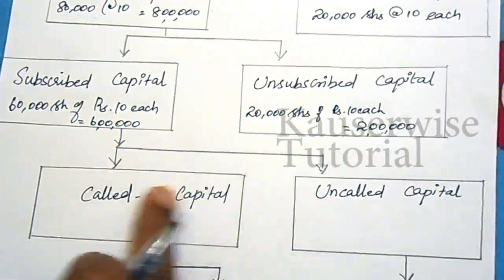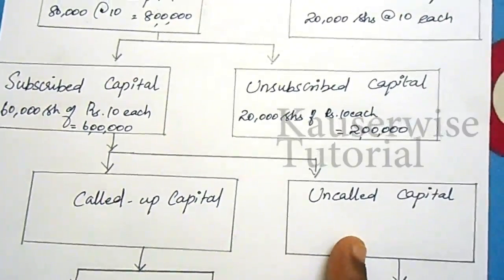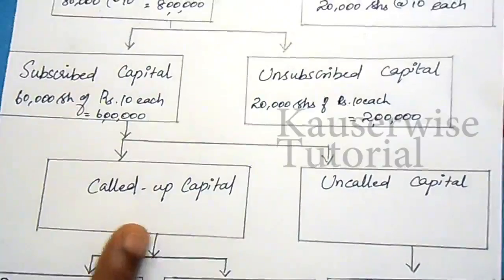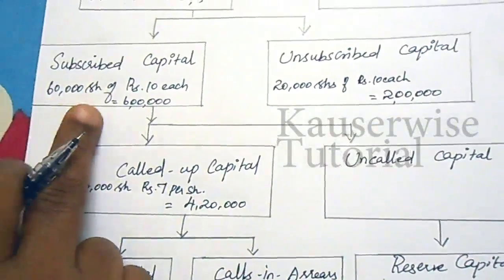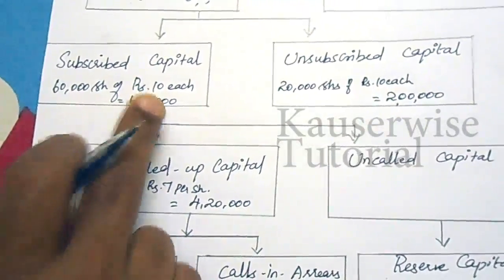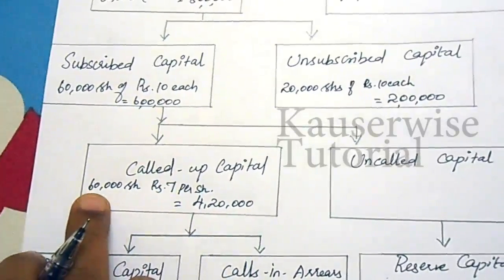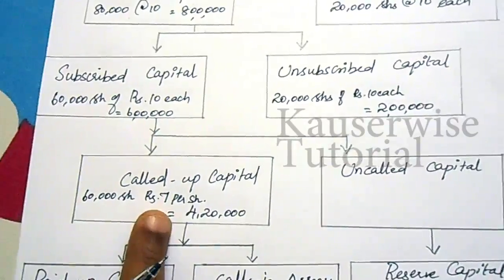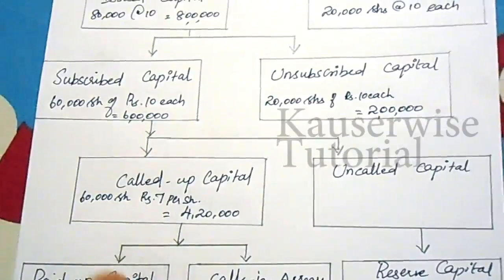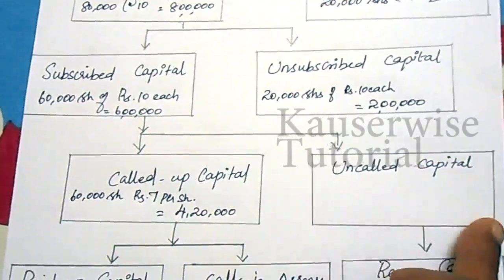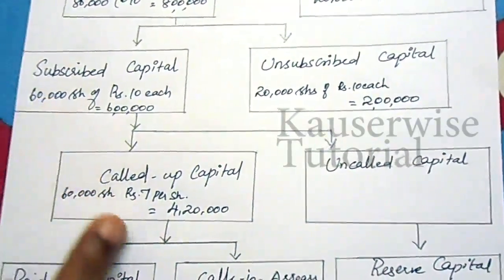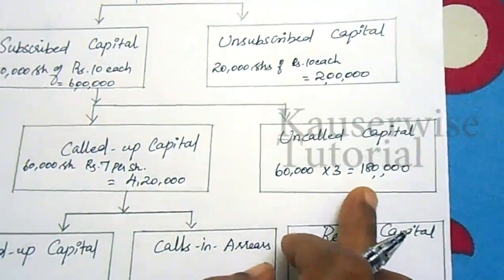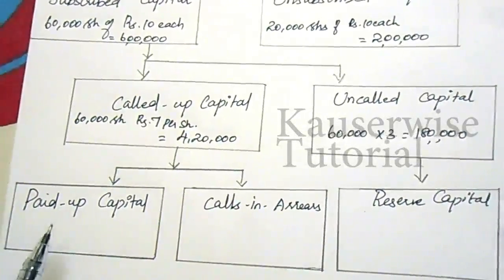Under subscribed capital there are two further divisions: called up capital and uncalled capital. Called up capital refers to the part of subscribed capital called up by the company for payment. For example, 60,000 shares at rupees 10 each were subscribed, but the company has so far called up only rupees 7, giving 60,000 × 7 = 4,20,000 as called up capital. The remaining rupees 3 per share, totalling 1,80,000, is the uncalled capital.